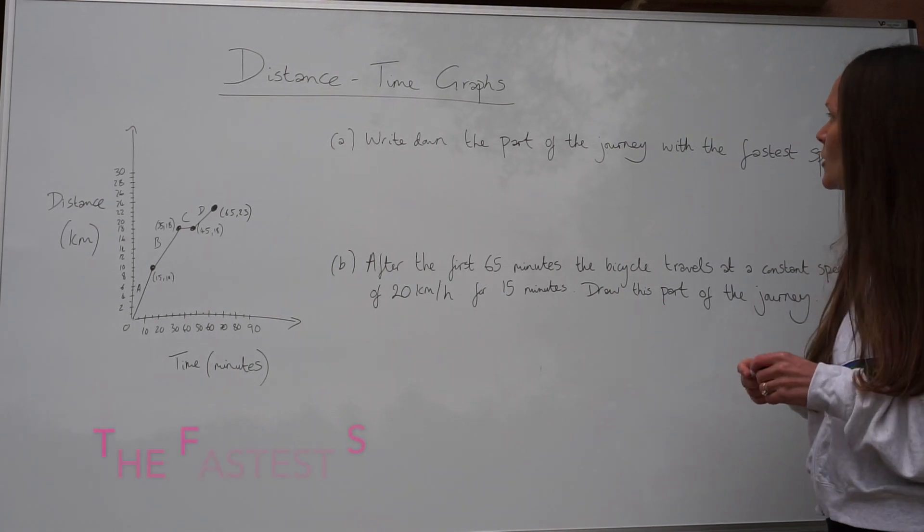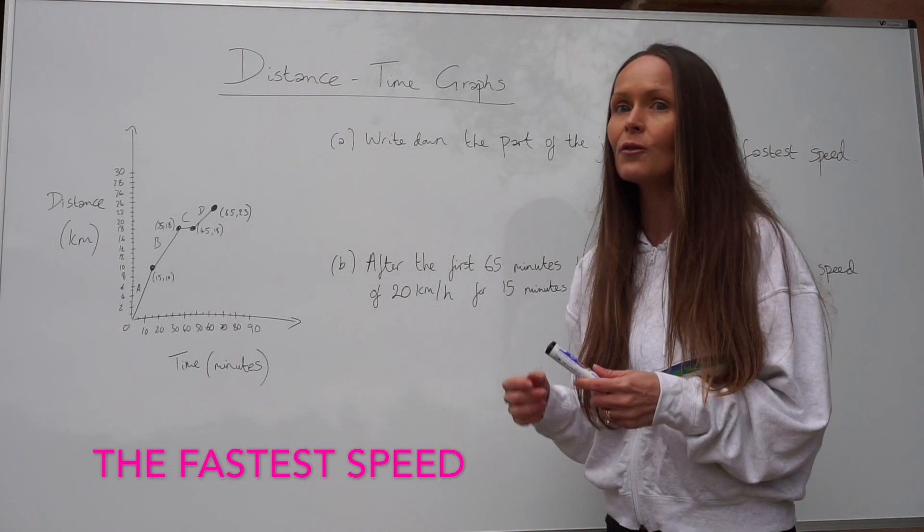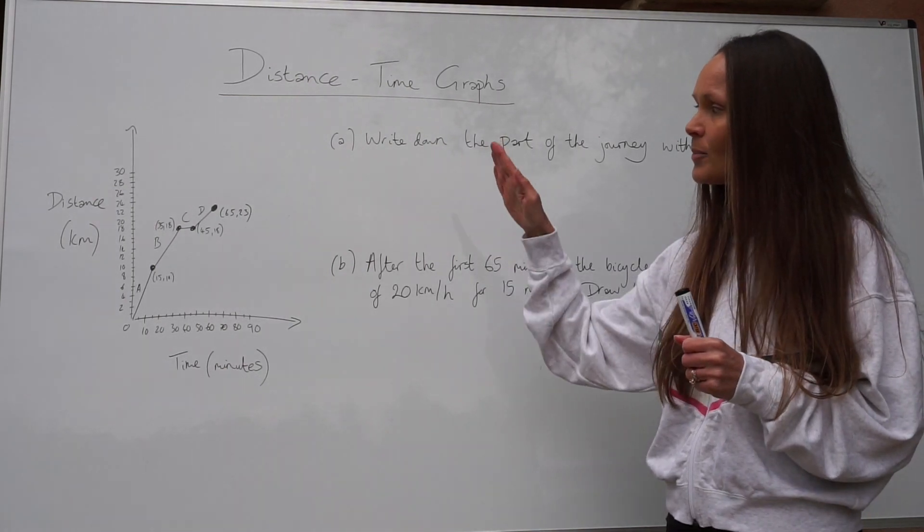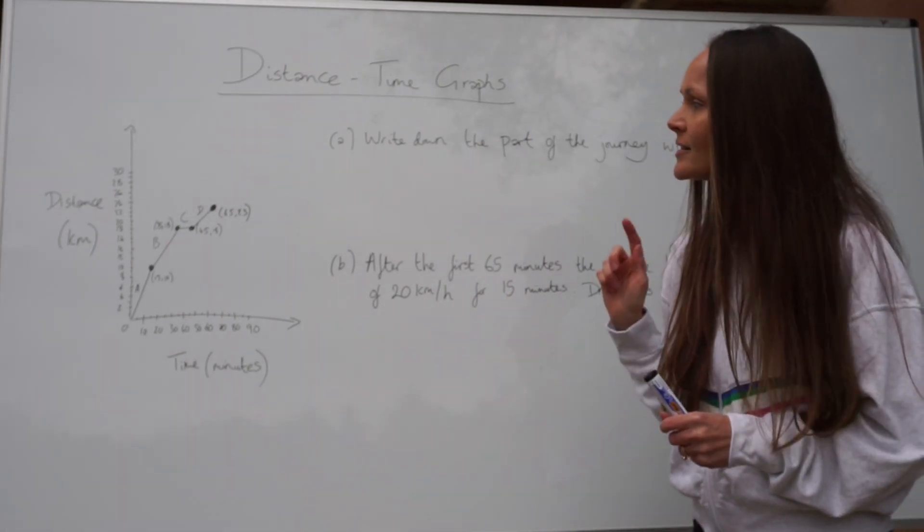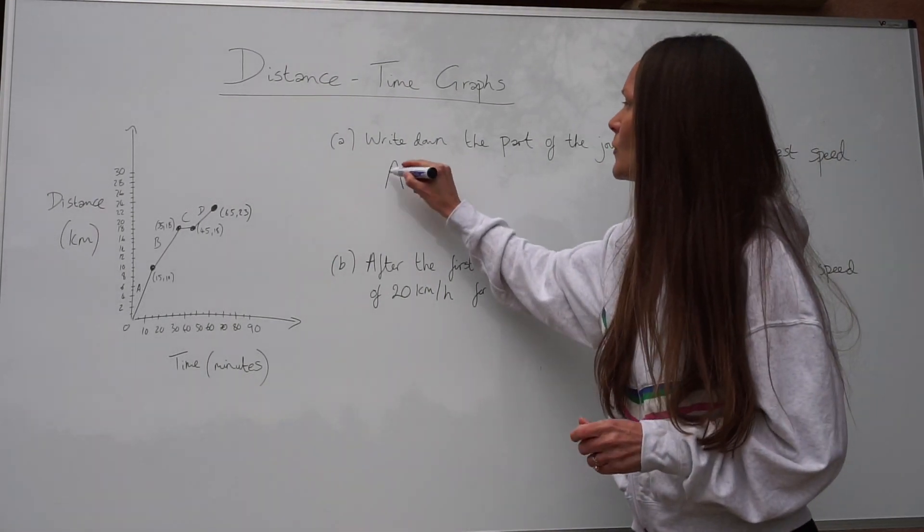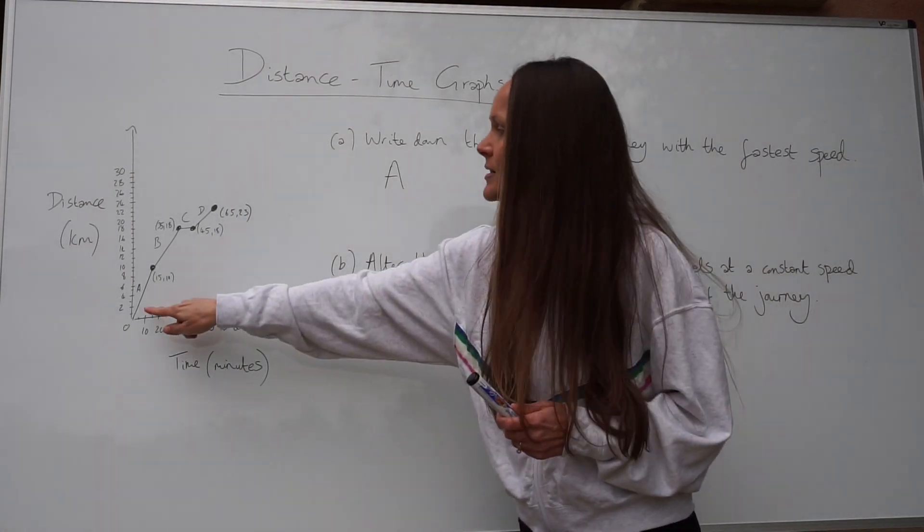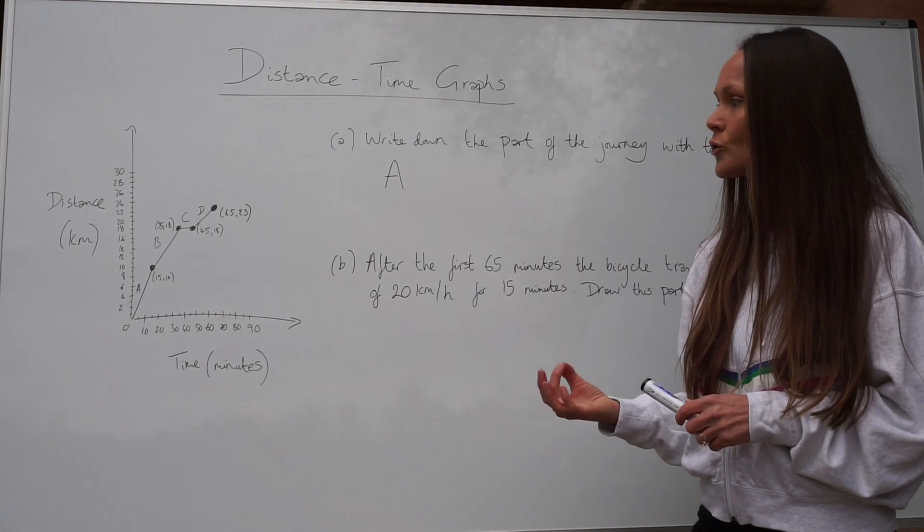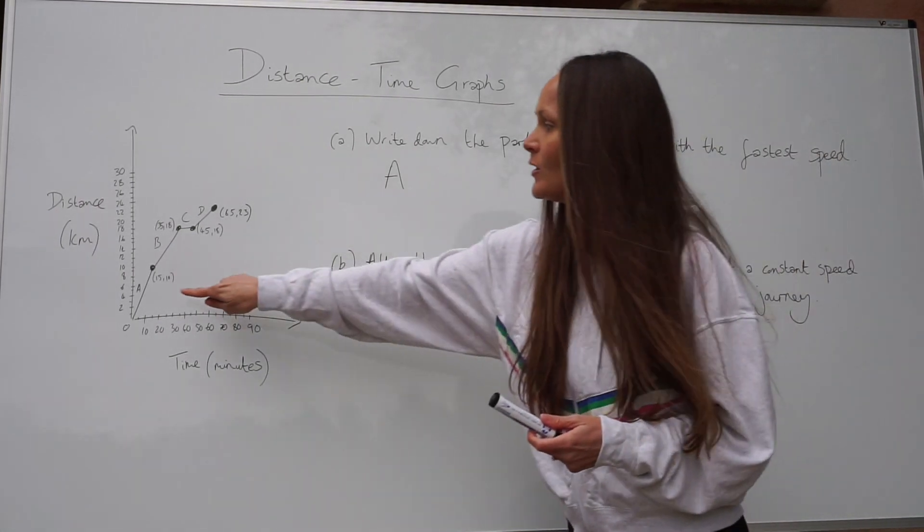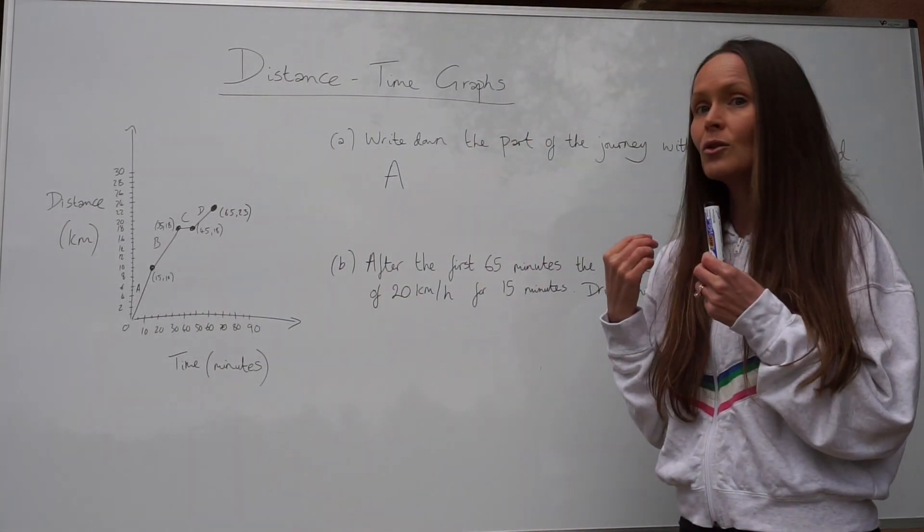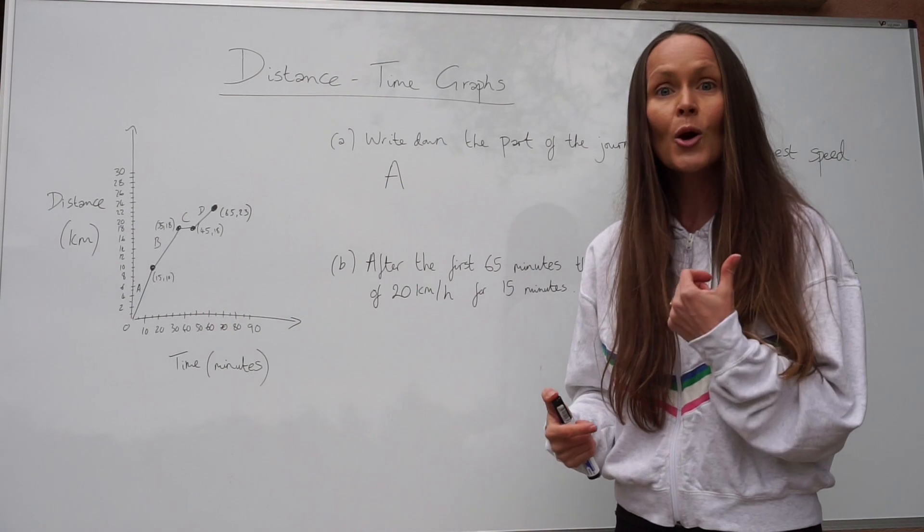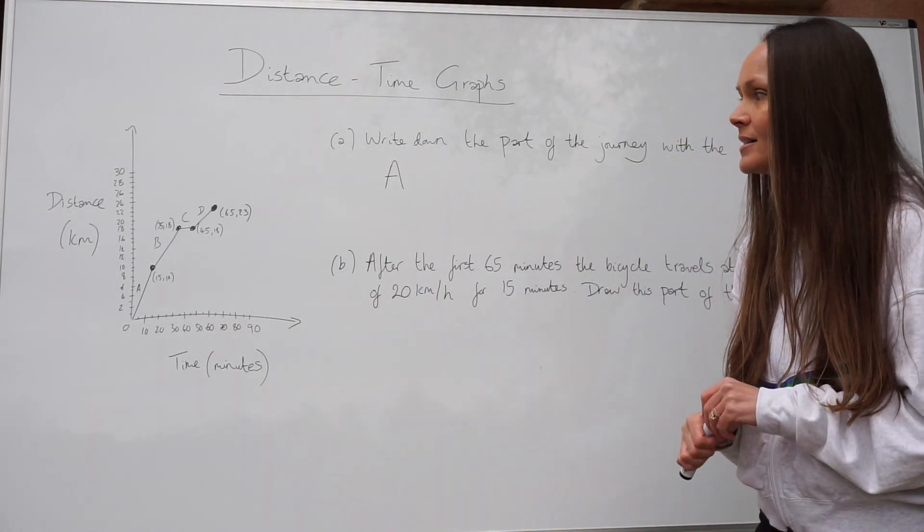So for part A, we have to write down the part of the journey with the fastest speed. Earlier, I mentioned the fastest speed is represented by the steepest line. So this is a flatter line. This is a steep line. Hopefully, you can just see from looking at the graph that section A has the steepest line. So that is where the bicycle is traveling the fastest. So all you need to do from part A is write down capital A, because that represents this part of the journey. If you're not sure from just looking at the graph which line is the steepest, what you need to do is calculate the gradient of the line. So when you calculate the gradients of the lines, you should take the one with the biggest number, because that means the fastest speed. If you're not sure how to work out gradients, go and have a look at my other lesson where I use a method called rise or run to calculate gradients.